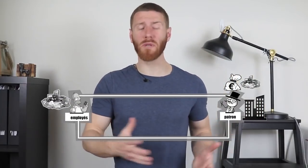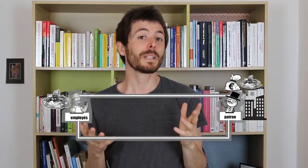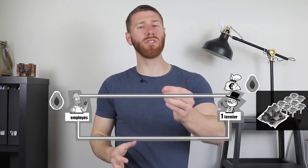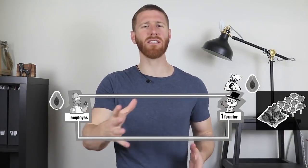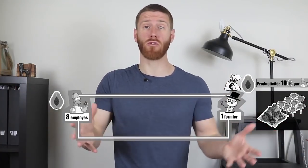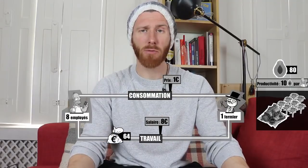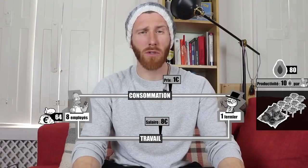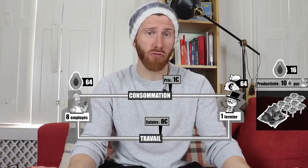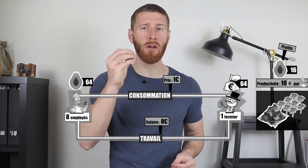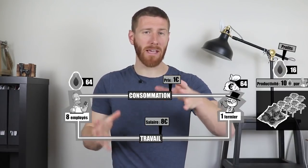The employees make things, the boss pays them a salary in exchange, the employees use that salary to consume part of the production, and the boss keeps what's left for himself. Why not a farm that produces papayas? Let's say there are 8 employees in the farm who each harvest 10 papayas — that's a total production of 80 papayas. Each papaya is worth €1, and each employee receives a salary of €8, so that's €64 in total wages.